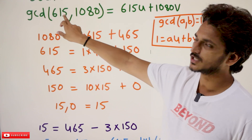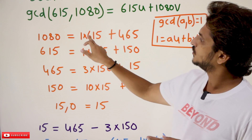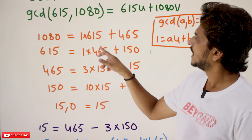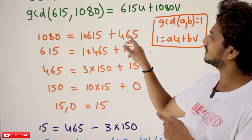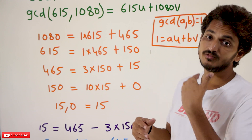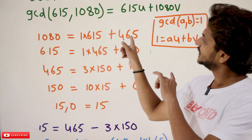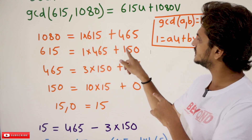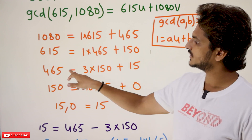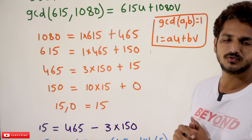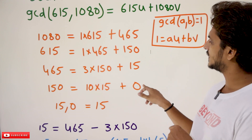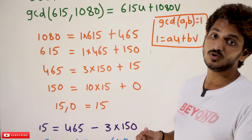1080 can be written with the biggest and smallest values. Using the division algorithm: a = b × quotient + remainder. So 1080 = 615 × 1 + 465. Now take the previous smallest and remainder: 615 = 465 × 1 + 150. Then 465 = 3 × 150 + 15. Then 150 = 10 × 15 + 0. We continue until we get 0. This is how we find GCD using the Euclidean algorithm.